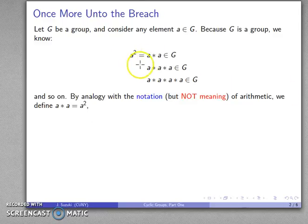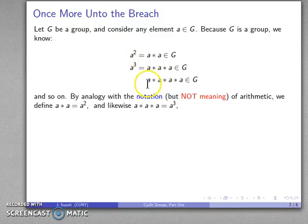And likewise, A star A star A we're going to call that A cubed, and A star A star A star A we're going to call that A to the fourth, and so on. So this notation A squared, A cubed, A to the fourth just means we're going to take this many copies of A and apply our group operation to them.